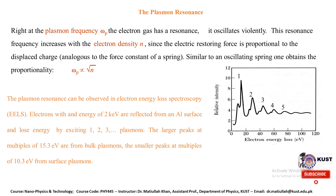The plasma resonance can be observed in electron energy loss spectroscopy (EELS). Electrons with an energy of 2 keV are reflected from an aluminium surface and lose energy by exciting one, two, three, or many plasmons. The larger peaks at multiples of 15.3 electron volts are from bulk plasmons.